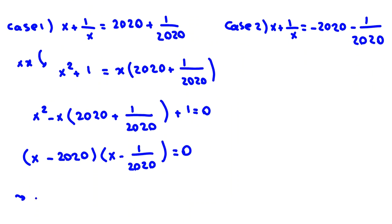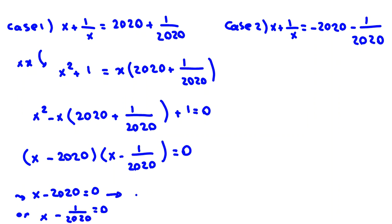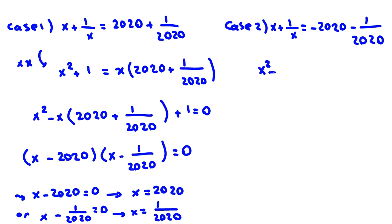From this factorization: x minus 2020 equals 0 gives x equals 2020, and x minus 1 over 2020 equals 0 gives x equals 1 over 2020. So in Case 1 the roots are x equals 2020 and x equals 1 over 2020.